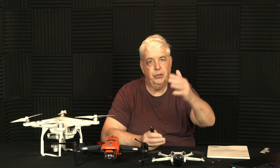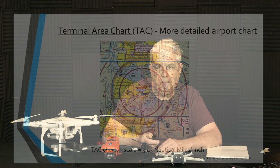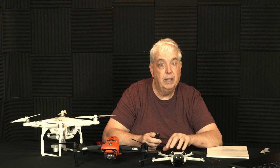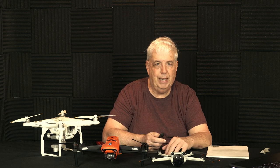There are also TAC charts — terminal area charts — and they are more detailed charts. Their scale is 343 nautical miles per inch. In the world of the FAA, you deal with nautical miles, not statute miles, which is what we're used to in our vehicles. Another chart is called the chart supplement, and it has extensive information on airports and all their frequencies. Look at pages 1-2 to 1-17 in your book — that is a chart supplement. If you have a question that asks you to go to a chart supplement, go to your book and remember that's in there.